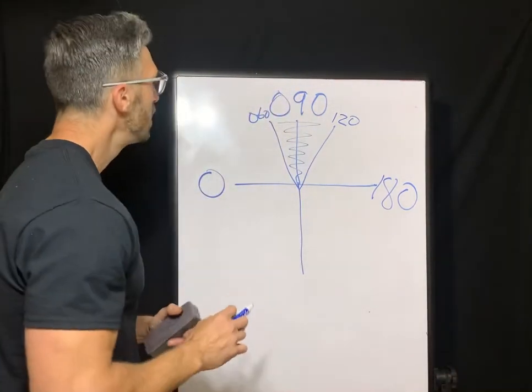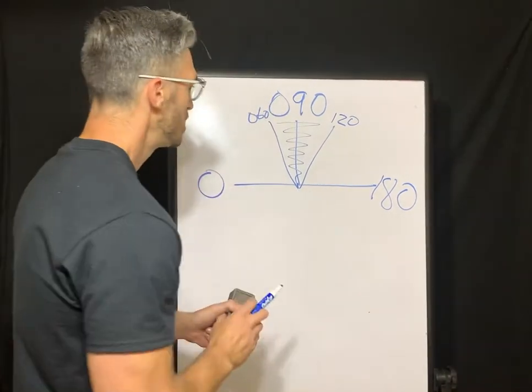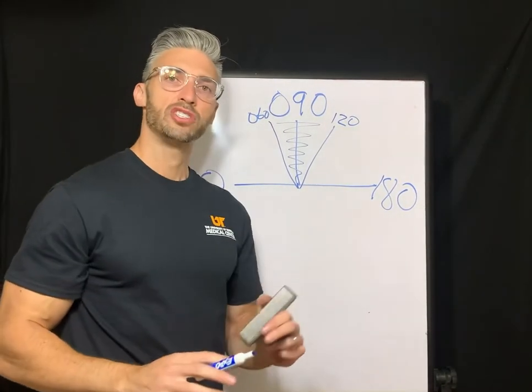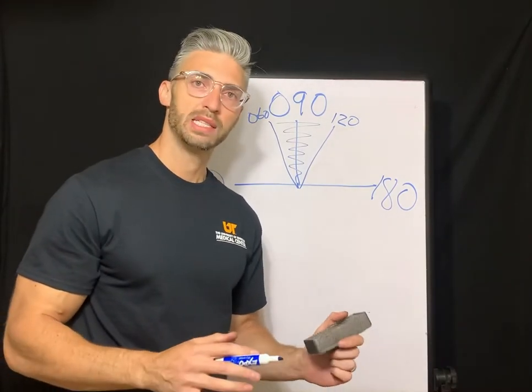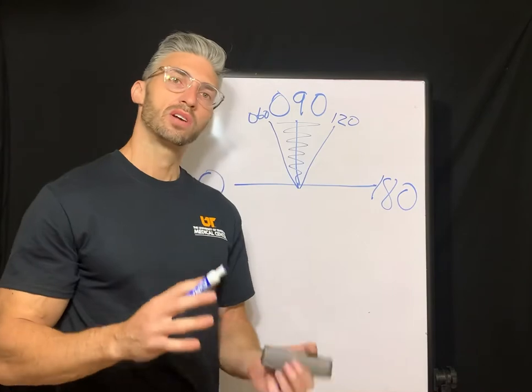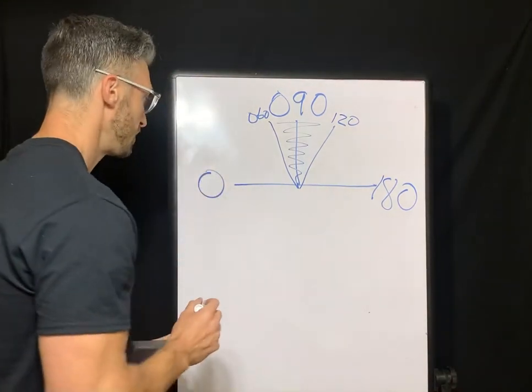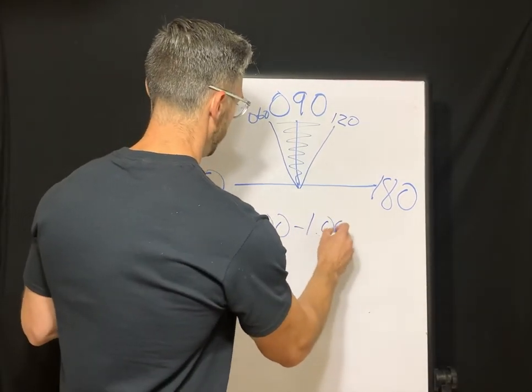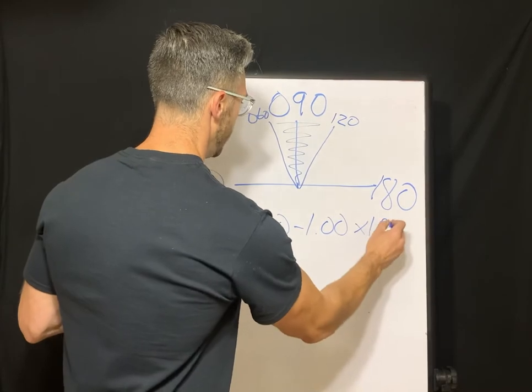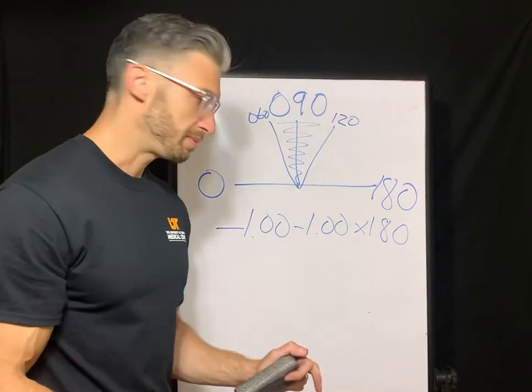This is regular astigmatism. So let's look at an example. So I will say for clarification, the prescription in minus cylinder form, which we always work in minus cylinder form, will have the axis around the 180 for these. And I'll show you why so that makes sense. So let's look at this example, negative one, negative one, axis 180.